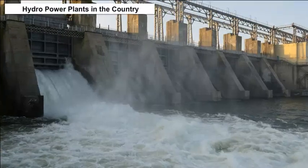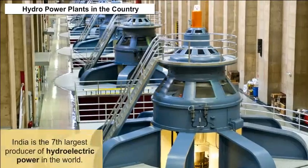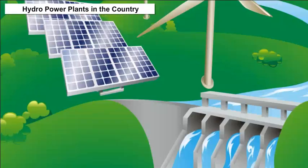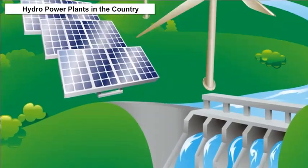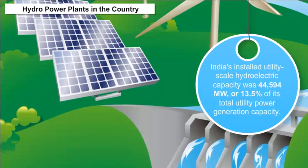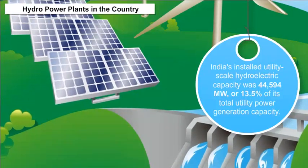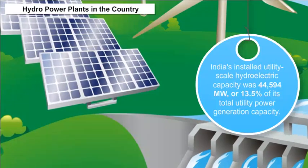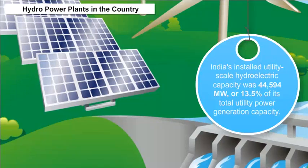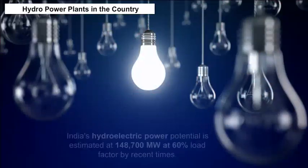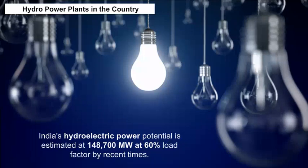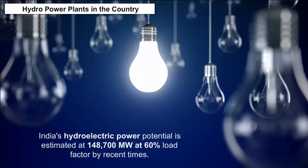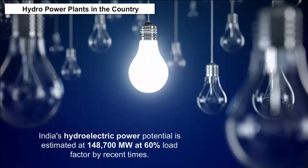Hydro Power Plants in the Country: India is the seventh largest producer of hydroelectric power in the world. As of 30 April 2017, India's installed utility-scale hydroelectric capacity was 44,594 megawatts, or 13.5% of its total utility power generation capacity. India's hydroelectric power potential is estimated at 1,48,700 megawatts at a 60% load factor.